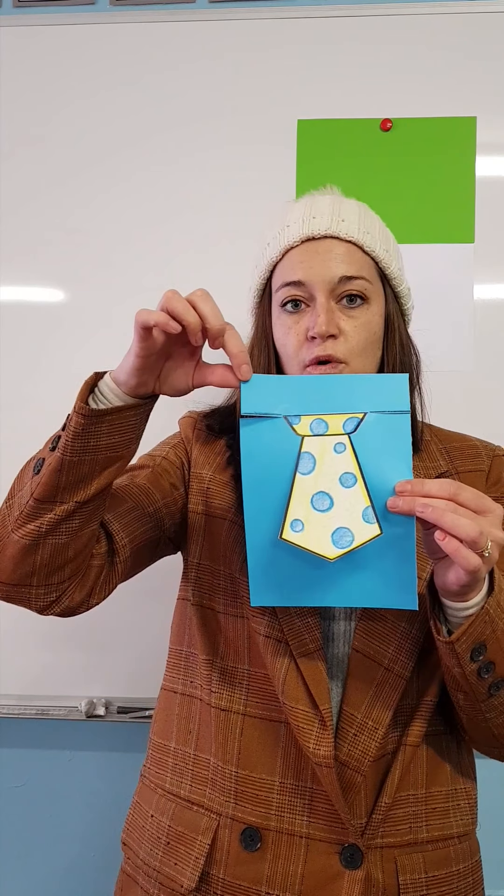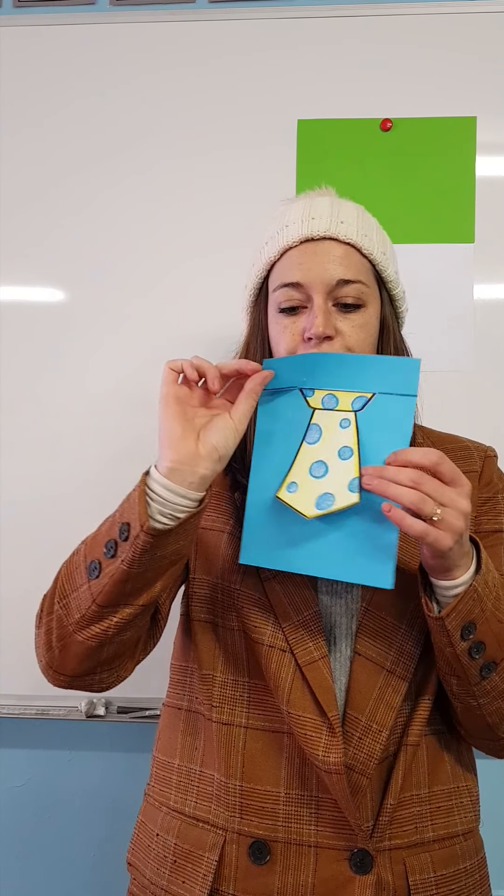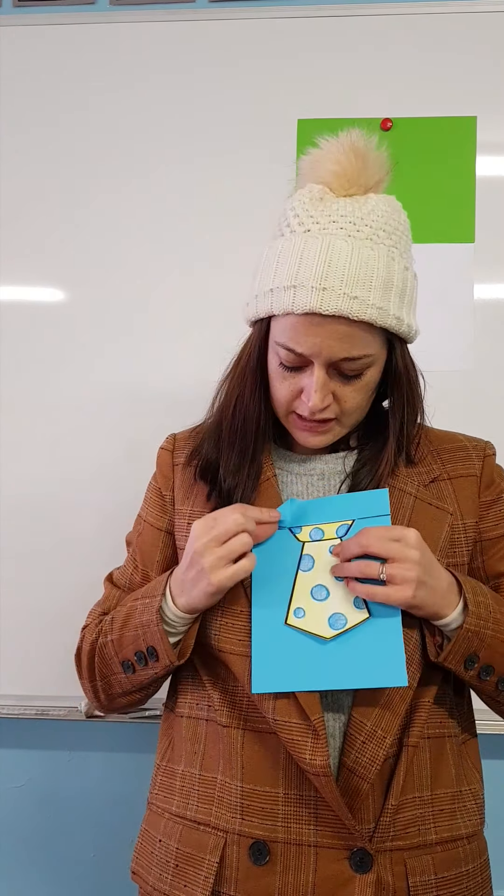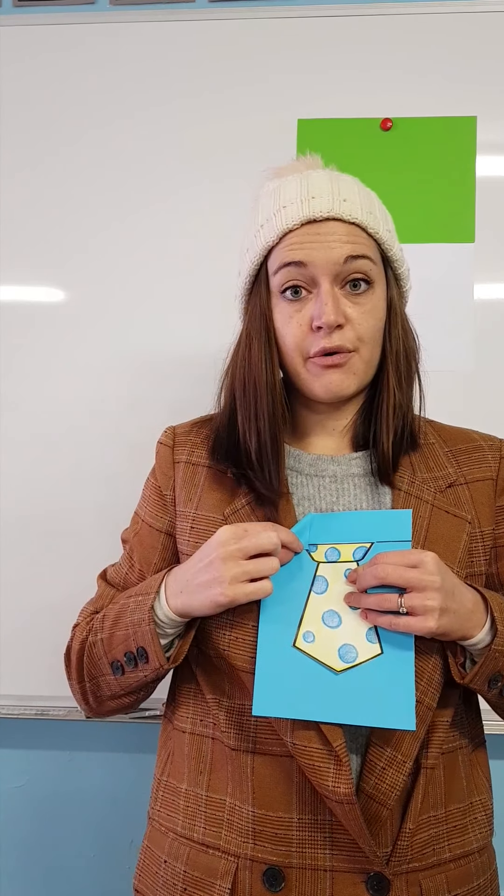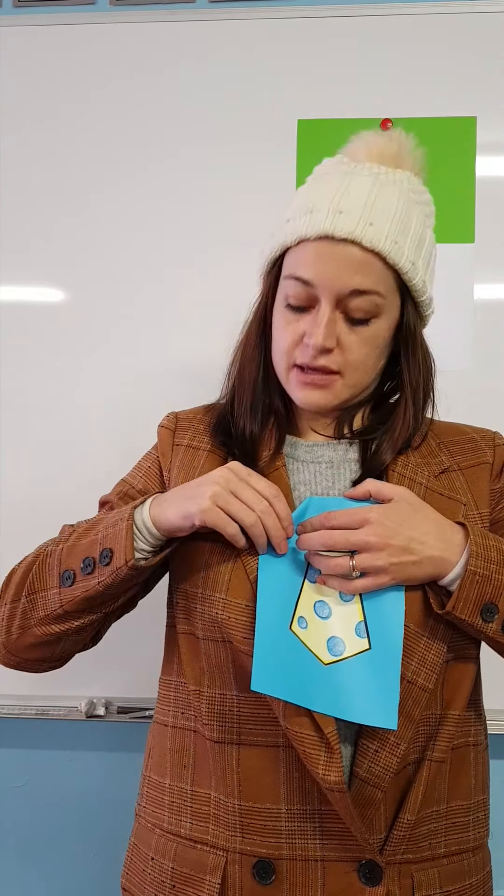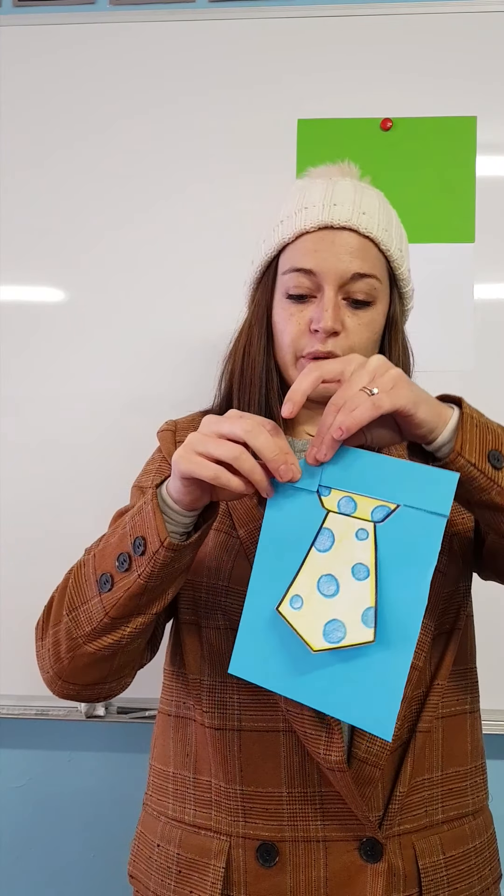Then the top corner of your paper, you're going to fold down and touch that corner of your tie. Press it down and fold your paper.